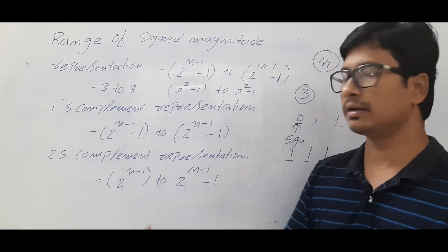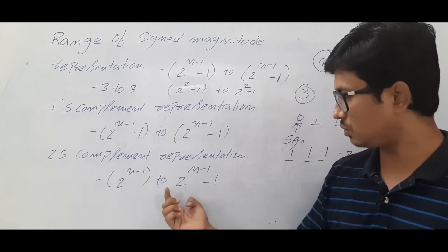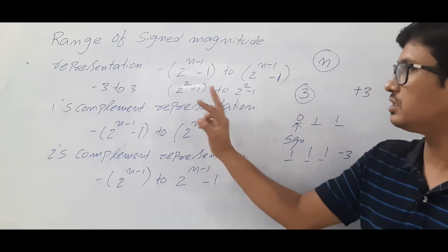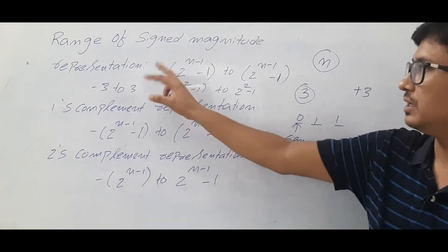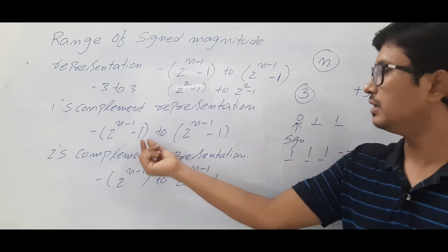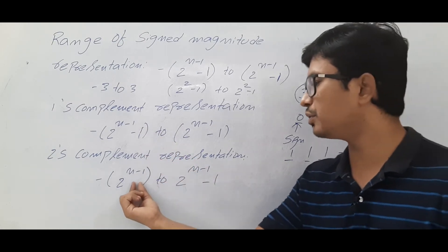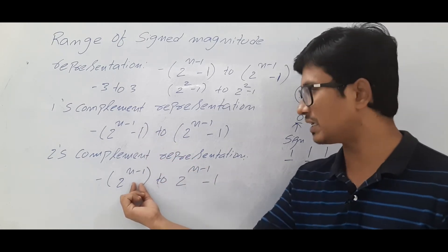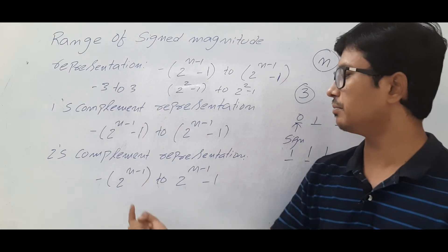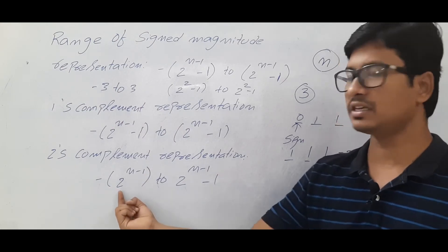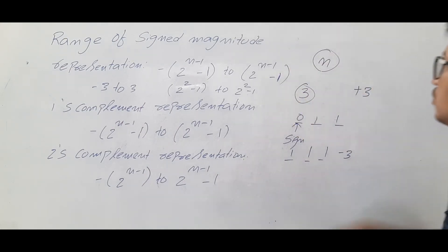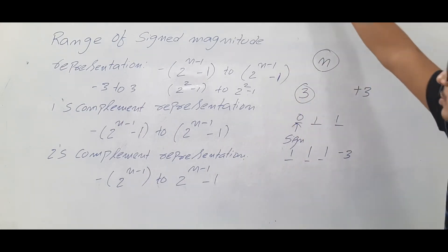The two's complement representation range is minus 2^(n-1) to 2^(n-1) - 1. The difference from sign magnitude and one's complement is that there is no minus 1 on the negative side. So instead of minus 3, here it will be minus 4. We will discuss why this is so.